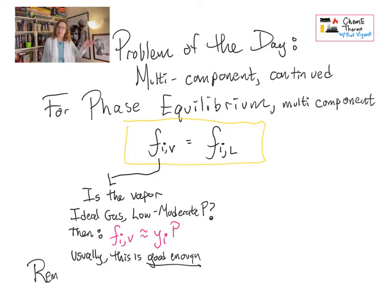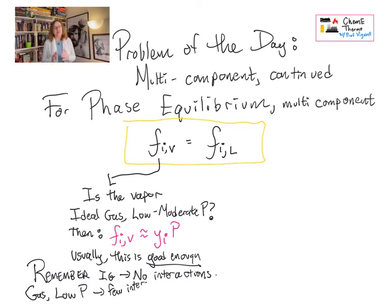That means we assume that the fugacity of the vapor is yi times p, which you'll recognize from Raoult's Law. So in Raoult's Law what we were doing all along was assuming ideal gas. Once we're around atmospheric pressure that doesn't introduce too much badness. It's not where most of the deviation from ideal behavior is in fact. Most of that's over on the liquid side.